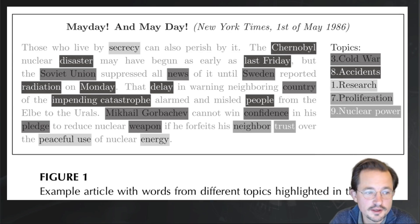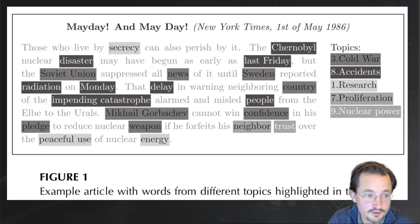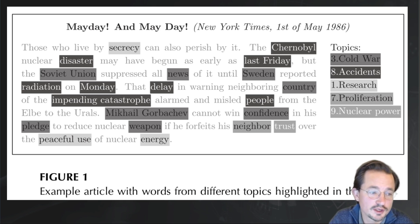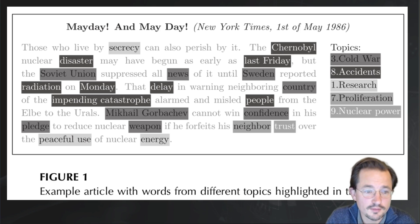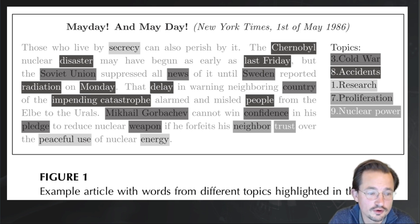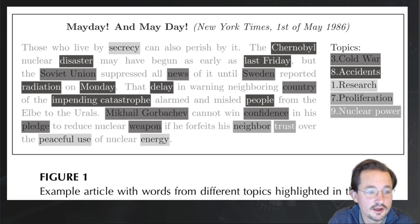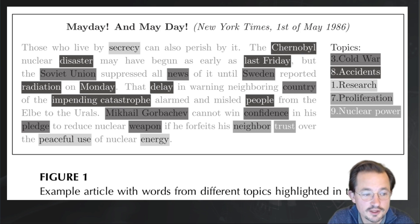As a first example, this figure shows a newspaper article from 1986 in the New York Times, coded with the topics that LDA automatically found in the whole corpus — every word is colored by the topic it found. The words that are grayed out were filtered out in pre-processing, either because they were too infrequent or because they were stop words. What we see here is an article that put the Chernobyl disaster in the context of the Cold War — how the Chernobyl disaster happened, how the Soviet Union suppressed all the news of it, how this delay alarmed and misled people, and how Gorbachev cannot win confidence in his pledges to reduce nuclear weapons if he forfeits trust over the peaceful use of nuclear energy.